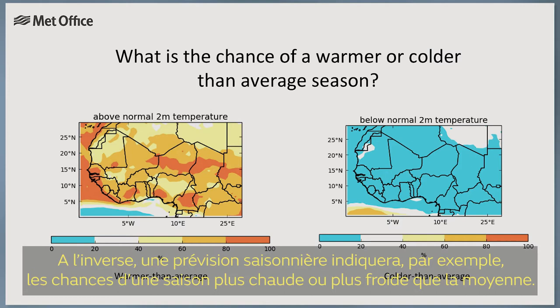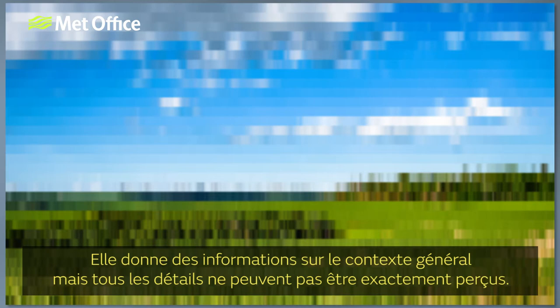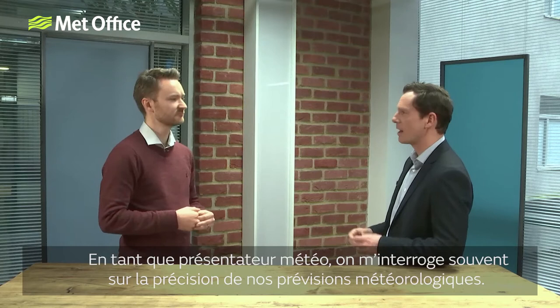Rather, a seasonal forecast will tell us, for example, the chances of a warmer or colder than average season. You can think of a seasonal forecast as a blurry photograph — you can't quite pick out the details of exactly who's in the picture or where it is, but you still have some information on what the picture is showing. As a weather presenter, I'm always asked how accurate our weather forecasts are — I'd say five to seven days for any kind of detail. So how is it at all possible that we can give forecasts for several months ahead, as we do in a seasonal forecast?